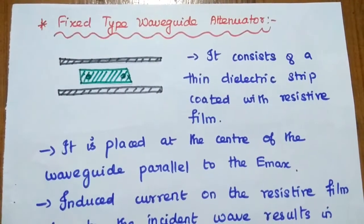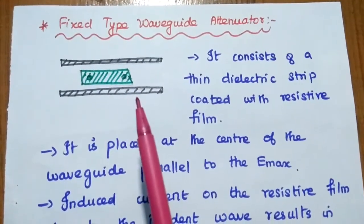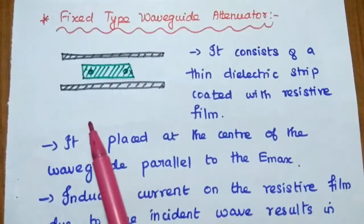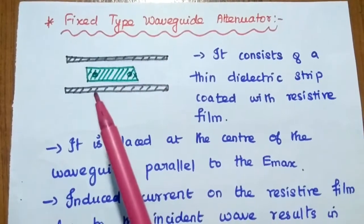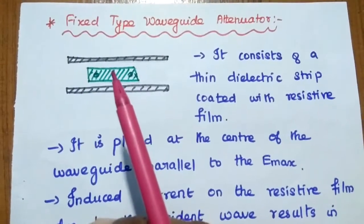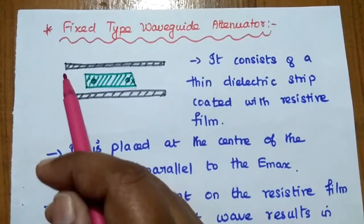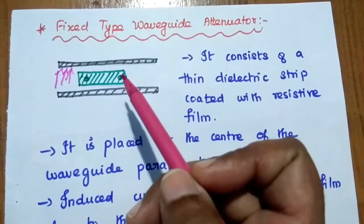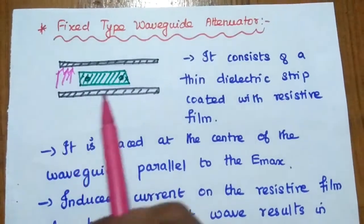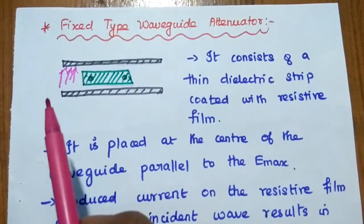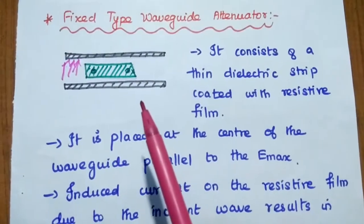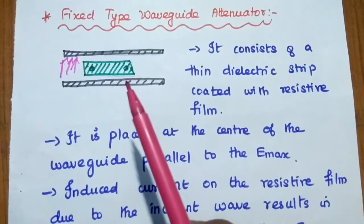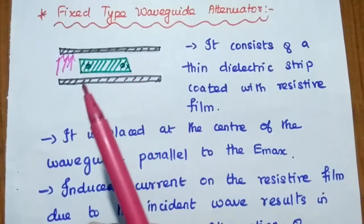Next is the fixed type waveguide attenuator. In this one, the waveguide consists of a thin dielectric strip coated with a resistive film, similar to our coaxial cable. We place this dielectric strip at the center of the waveguide parallel to the E-max. Parallel to the E-max means if the electric field comes like this, this strip is also placed parallel to it. This ensures it can absorb the incoming signal. If it is perpendicular to the electric field, it cannot absorb the required amount of attenuation. We must ensure that this dielectric strip is placed parallel to the maximum electric field.